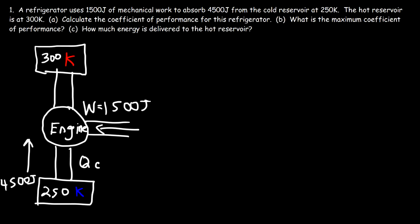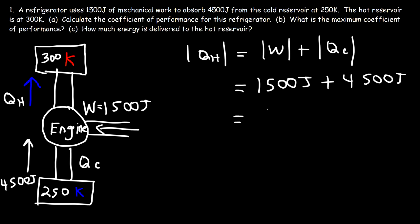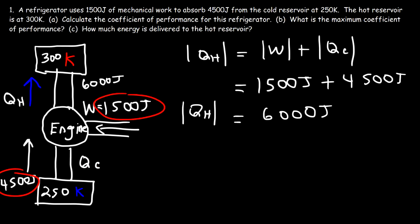Now part C: how much energy is delivered to the hot reservoir? Our goal is to calculate QH. The absolute value of QH equals the absolute value of W plus the absolute value of QC. The mechanical work is 1,500 joules and QC is 4,500 joules, so a total of 6,000 joules of energy will be transferred to the hot reservoir.